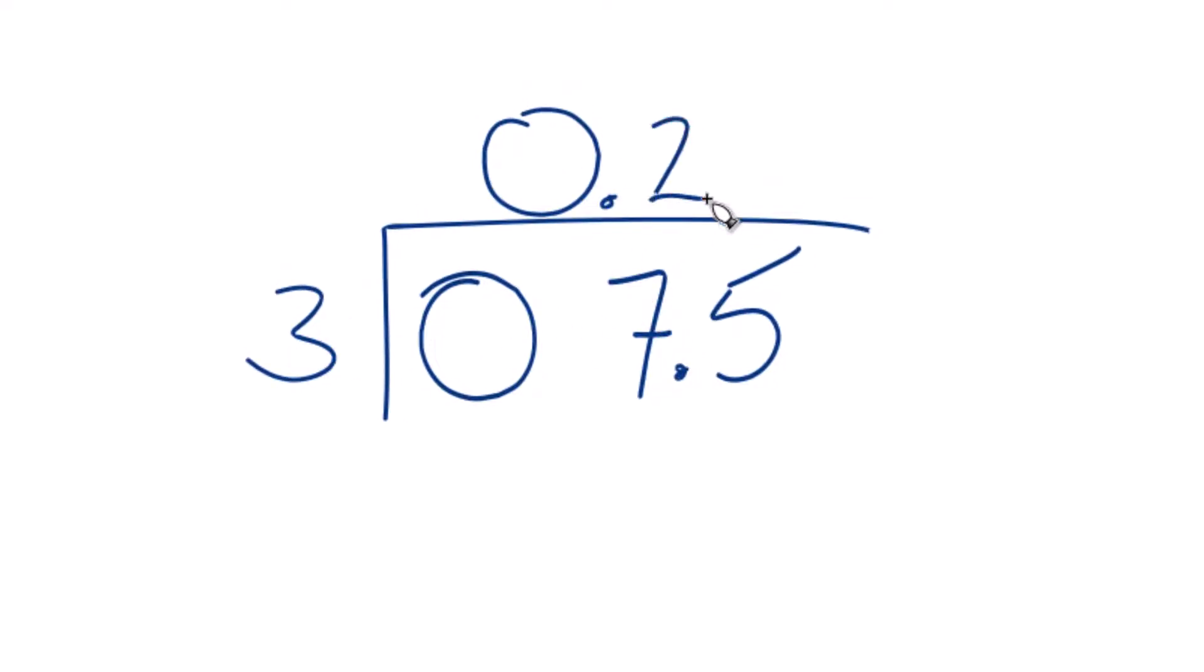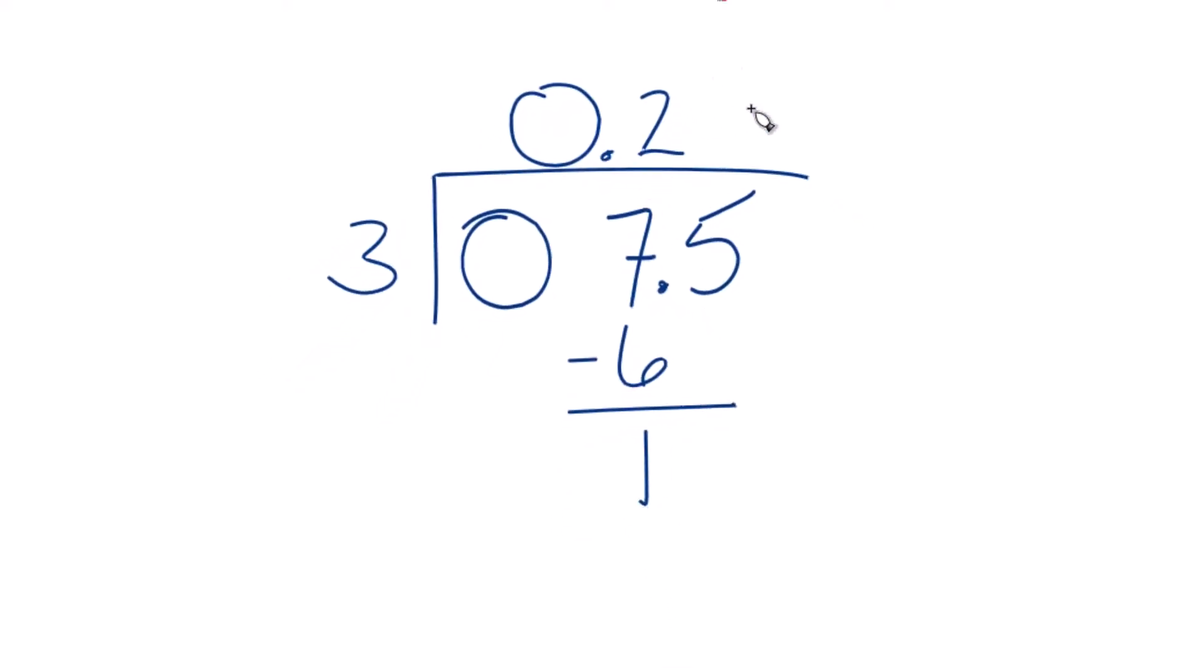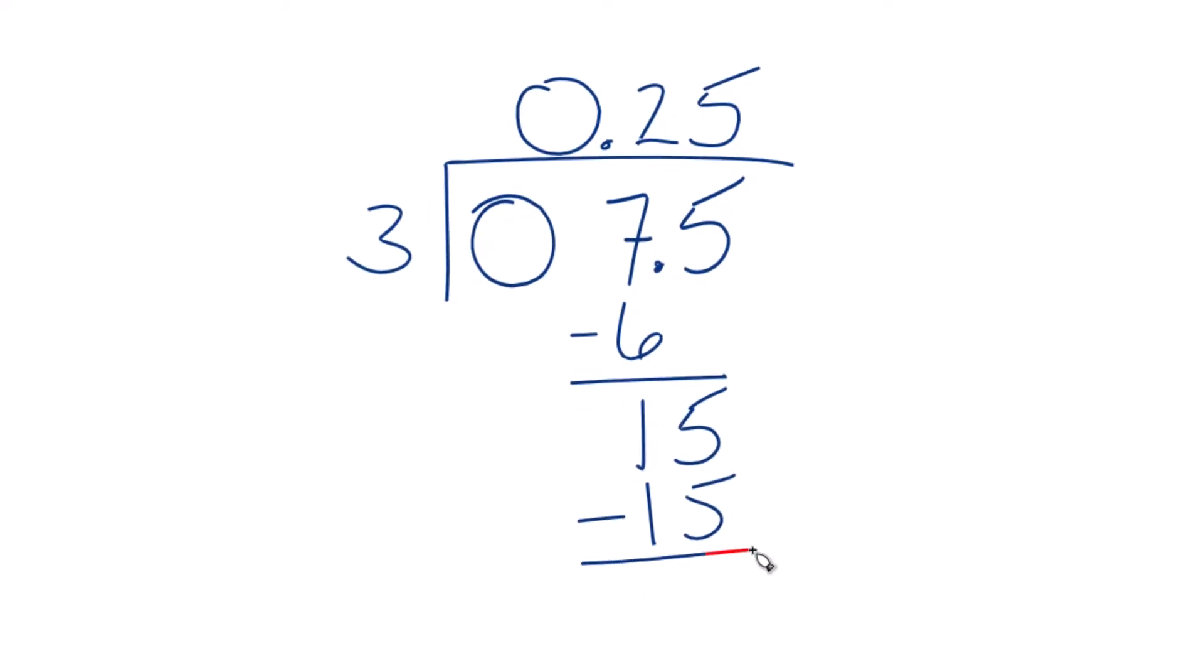Let's see, 2 times 3, that's 6. Subtract and we get 1. And let's move over a decimal place. We can bring the 5 down here. And 5 times 3, that's 15. We subtract, no remainder.